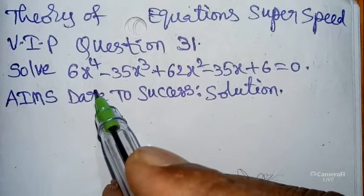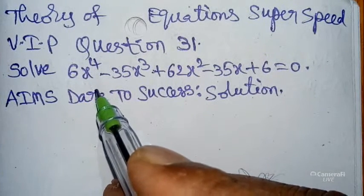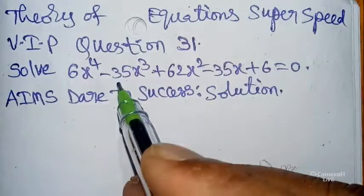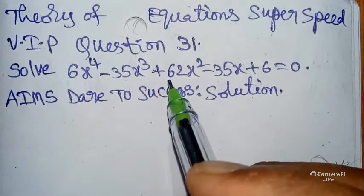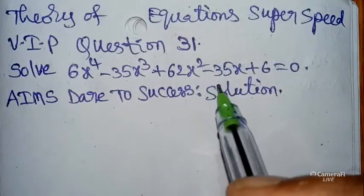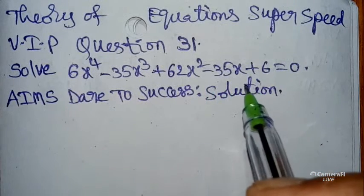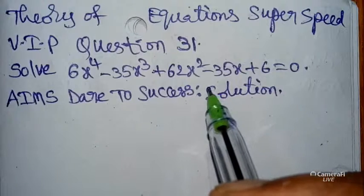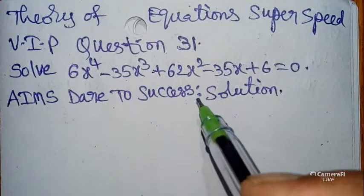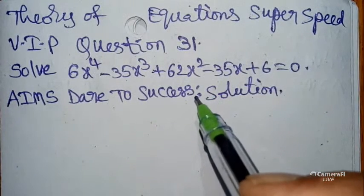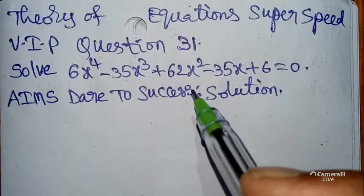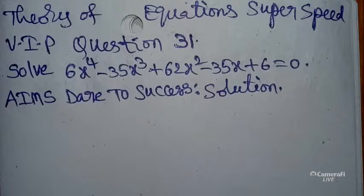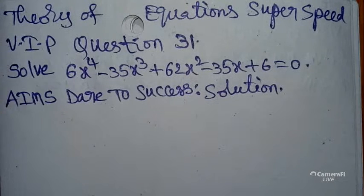Today our demanded question from the students is: solve 6x⁵ minus 35x³ plus 62x² minus 35x plus 6 equals 0. It is not a difficult question, my dear students. So if you listen carefully and learn carefully, 100% sure success will come to you automatically.